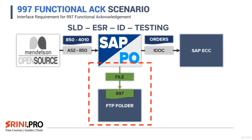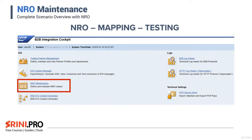In the 997 functional acknowledgment scenario, we will reuse the existing scenario where Mendelssohn triggers an 850 message to SAP PO. We will capture the 997 and dump it into an FTP folder. In the NRO maintenance section, we will create a counter in NRO maintenance and use that counter in the mapping program. At the module level, we will convert our message to fill NRO variables into the output EDI file — this is useful when you want to generate a counter in the ISA or GS segments.